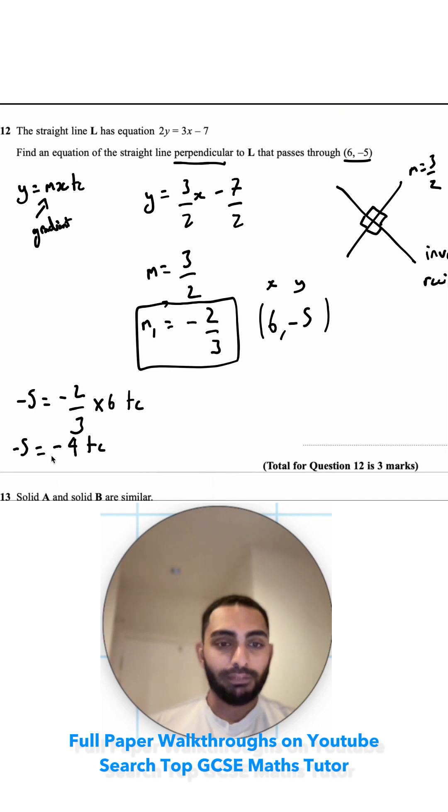I need to add 4 to both sides, so negative 1 equals c. Now I have my c value and my m value. I can write my final equation: y equals negative 2 thirds x minus 1.